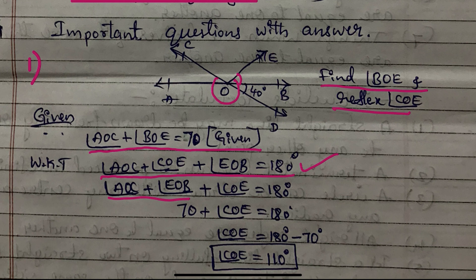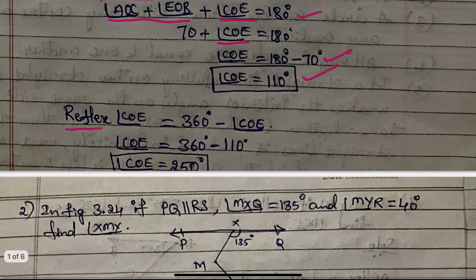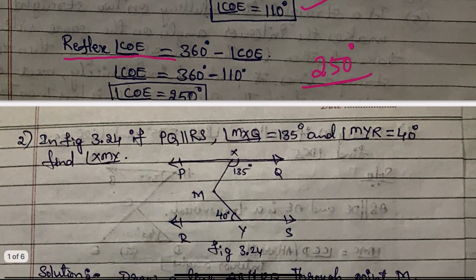Since the sum of those two angles is 70 degrees, angle COE equals 180 minus 70 equals 110 degrees. But we want the reflex angle, so reflex angle COE equals 360 minus 110 equals 250 degrees. The reflex angle COE is 250 degrees.